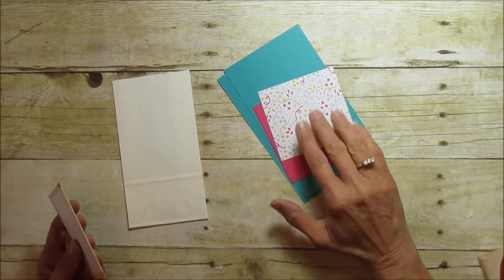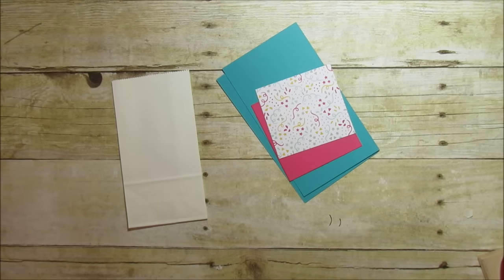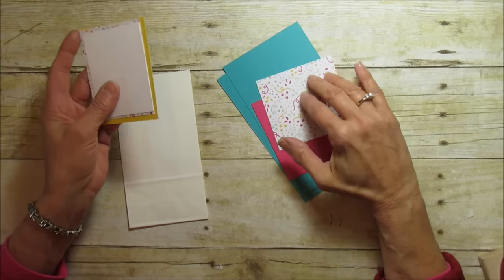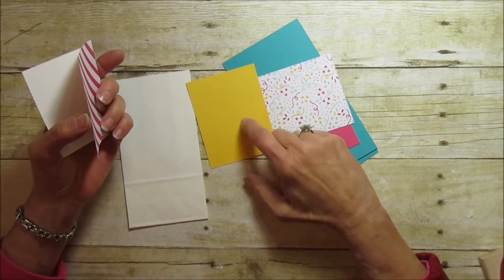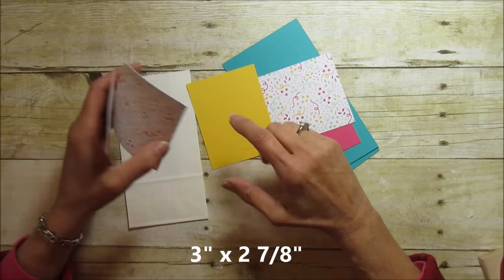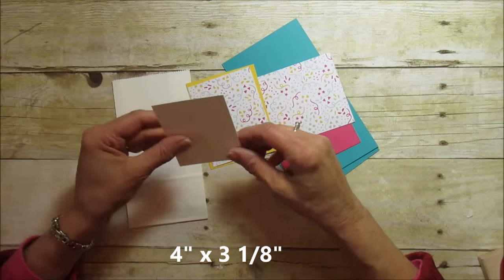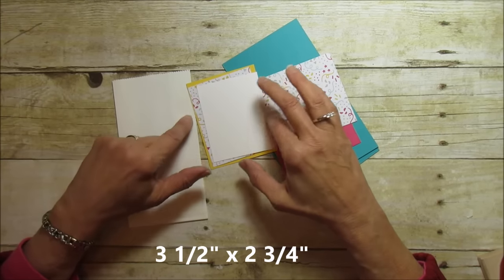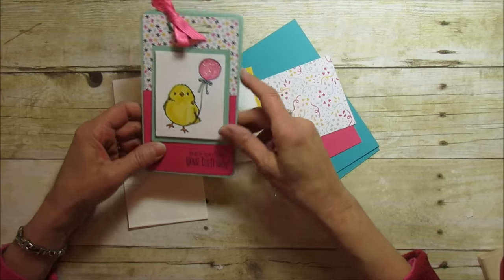This is some designer series paper from our new birthday stuff. It's the It's My Party designer series paper stack and I've used it before in some of my videos. Then to mat the bird I'm going to use the Daffodil Delight this time and this piece is going to be 3 by 2 7/8. Then another piece we're going to use is 4 by 3 1/8 and then another piece that you need to stamp is going to be 3 1/2 and 2 3/4 inches. On this other one I didn't put this mat behind it but I thought I would add it this time.